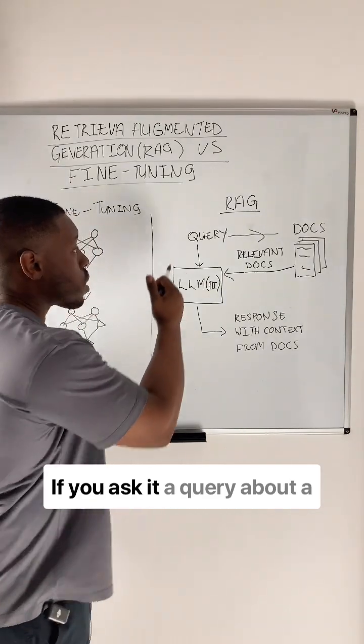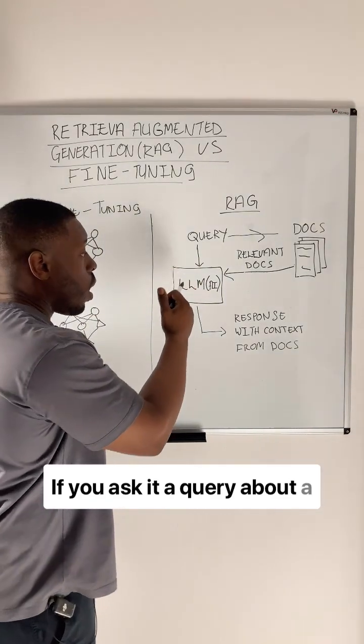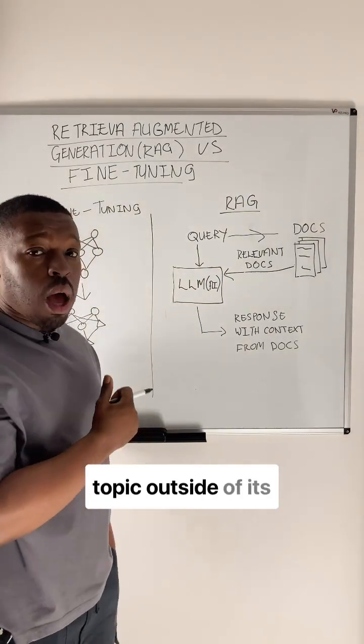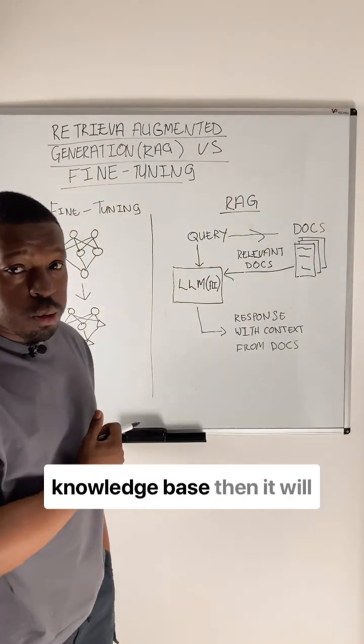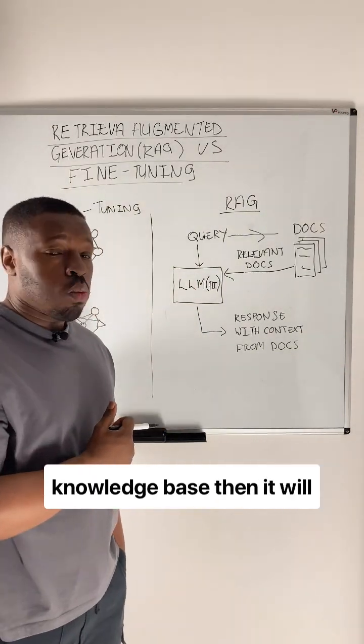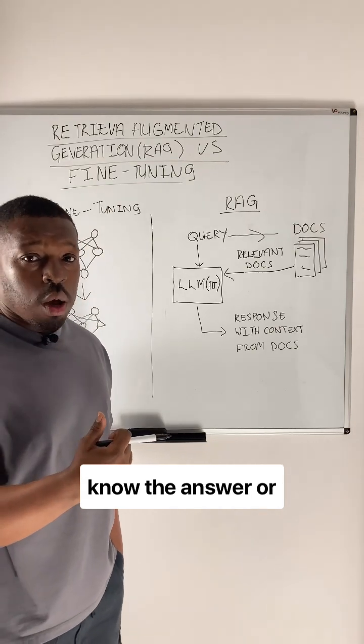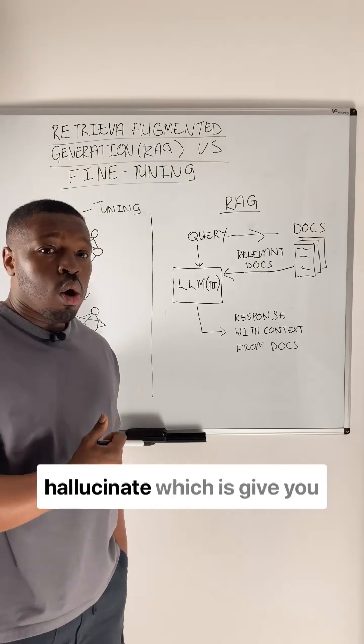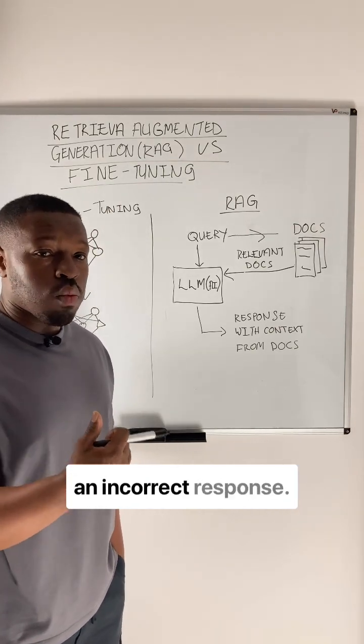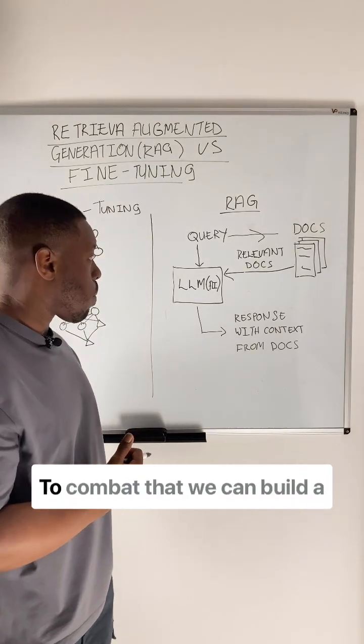If you ask it a query about a topic outside of its knowledge base, then it will either tell you it doesn't know the answer, or hallucinate — which is give you an incorrect response.